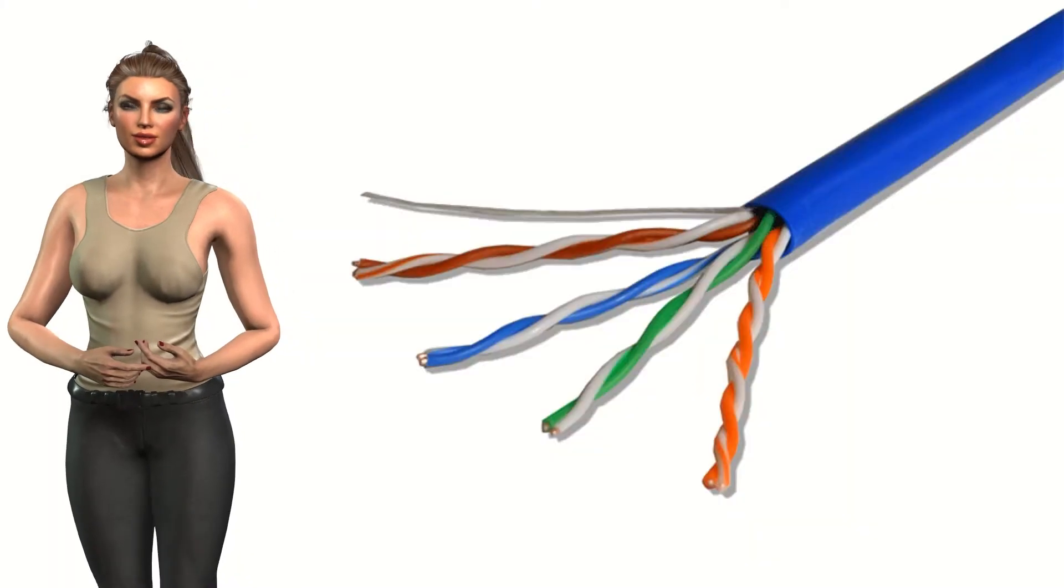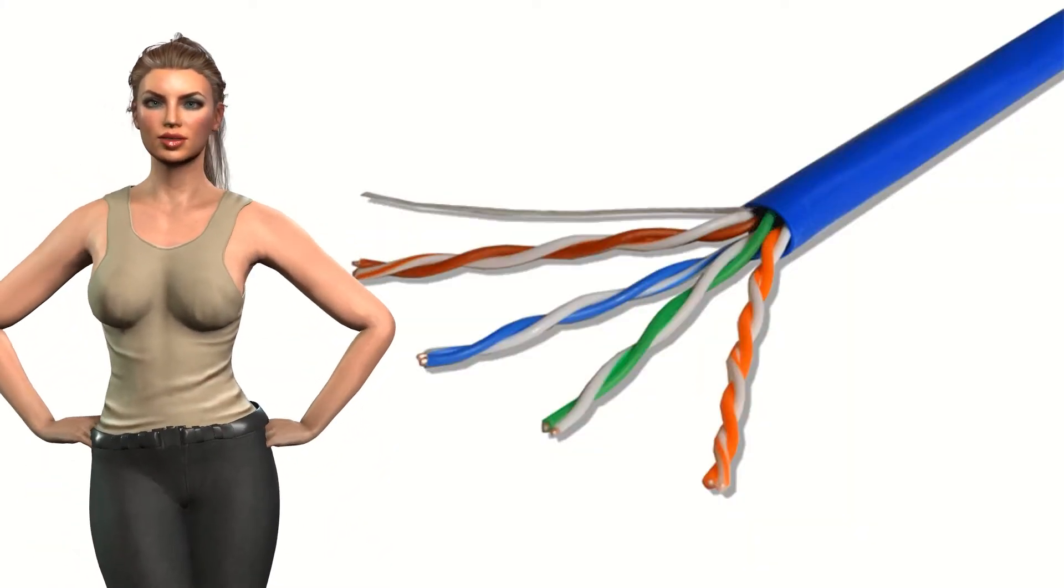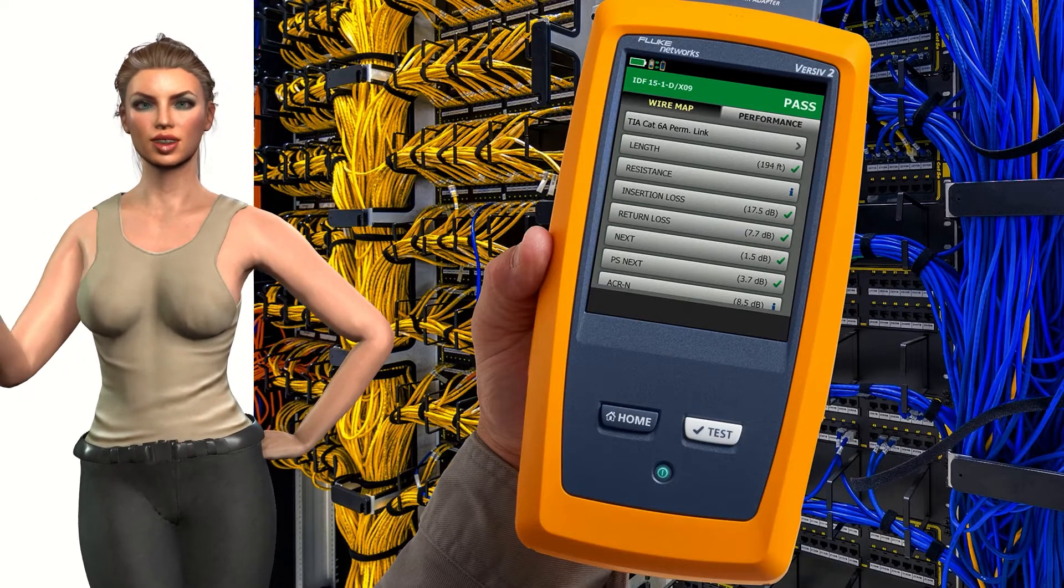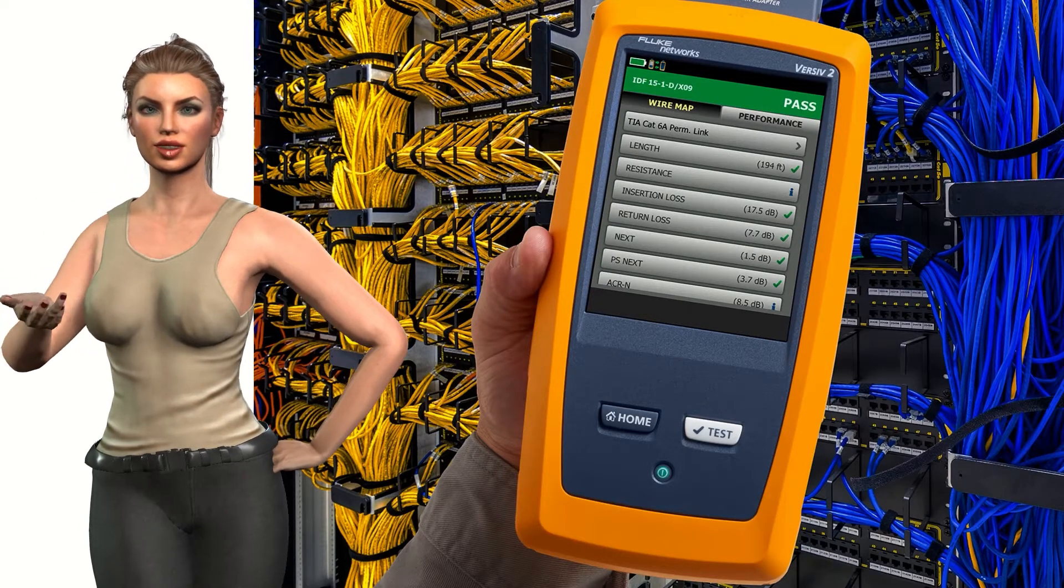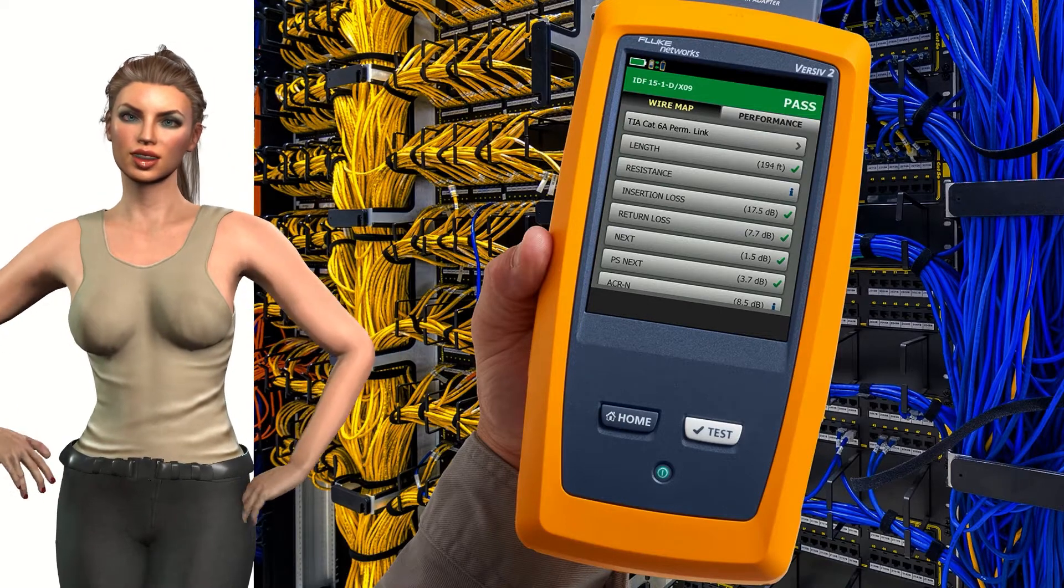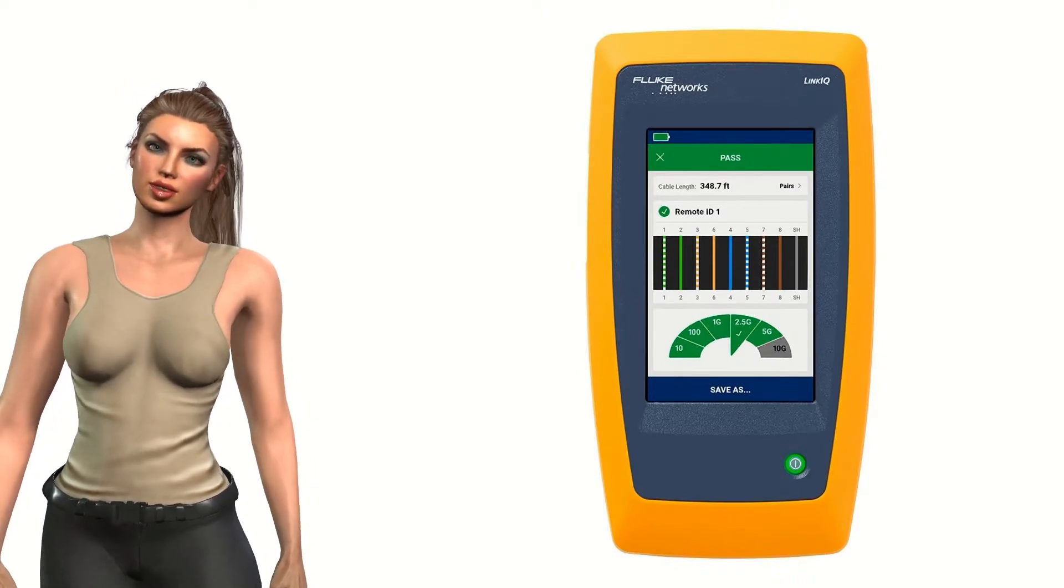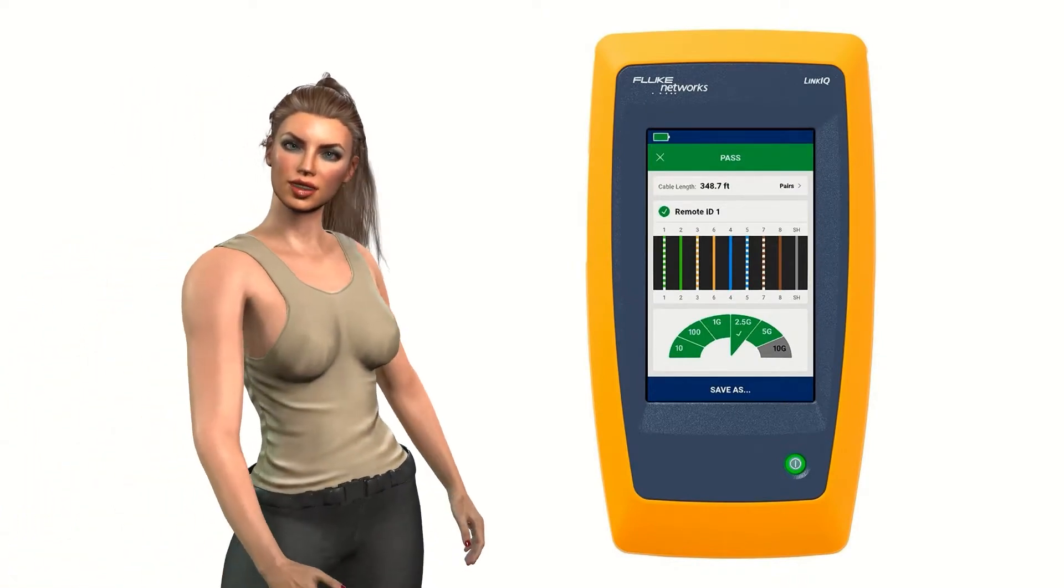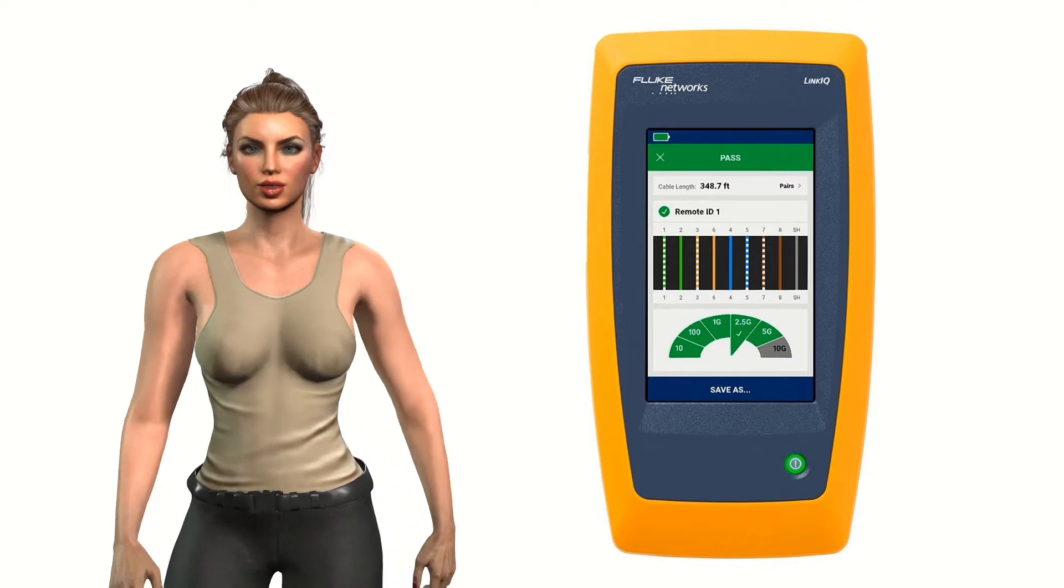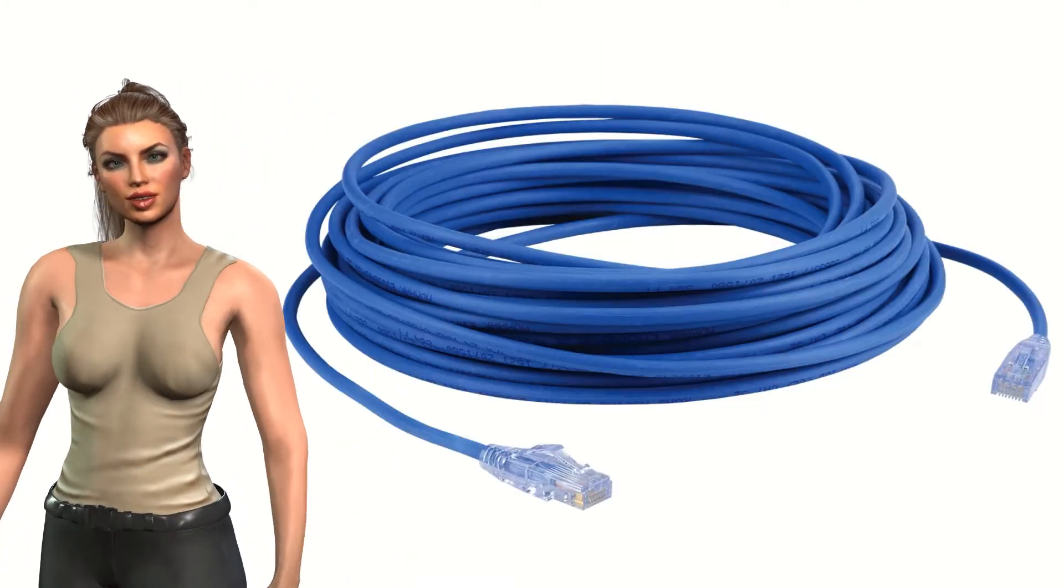We are going to consider twisted pair copper cables with four pairs of wires. When testing and certifying a cable, a multitude of tests can be carried out and various limits applied, but in this video we are going to focus on the verification of the wiring map. Verifying the wiring map is one of the most basic and necessary tests that we must perform on a twisted pair cable to ensure its correct operation.